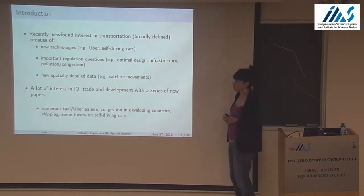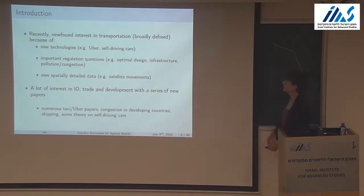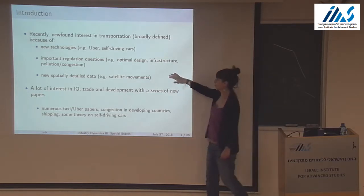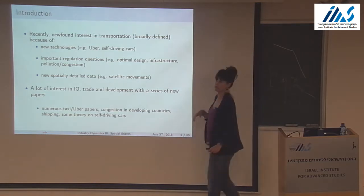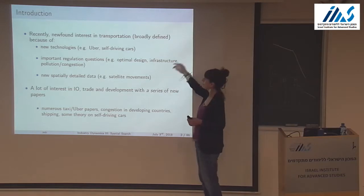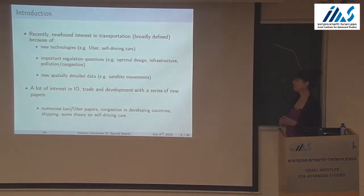Whether this has to do with optimal design — right now Uber is operating almost everywhere and we haven't really thought about regulation, which seems crazy given all the related issues. Infrastructure is a huge deal, and pollution and congestion related to optimal design are also big issues people are only starting to think about seriously. We're also starting to have really cool data — taxi data, satellite data on ship locations.